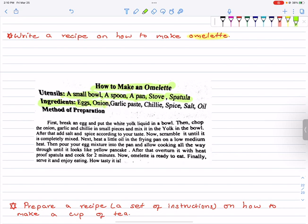Method of preparation. First, break an egg and put the white yolk liquid into a bowl. Then chop the onion, garlic and chili in small pieces and mix it in the yolk in the bowl. After that, add salt and spice according to taste. Now, scramble it until it is completely mixed. Scramble means ghotnu.